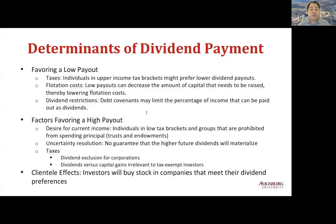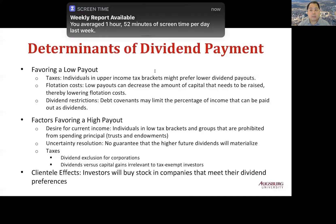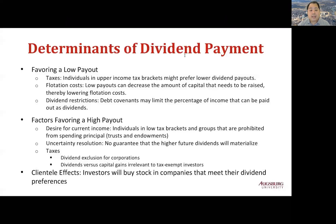High payout is favored by other investors. Individuals in lower tax brackets or groups that are prohibited from spending principal, such as trusts and endowments, prefer high payout since they have a desire for current income. Some people simply prefer current income because of uncertainty about future dividends. For corporations, 70% of dividend income is excluded, so corporations may prefer high payout stocks. For tax-exempt investors such as non-profit organizations, dividend policy doesn't matter. Investors will buy into a company that meets their dividend preference — this is called the clientele effect.